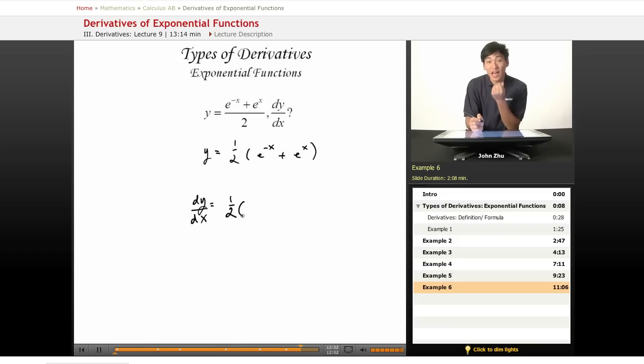e to the x, the derivative of that is just e to the x, but e to the negative x, the derivative of that is simply e to the negative x times the derivative of the top portion, which is negative 1.